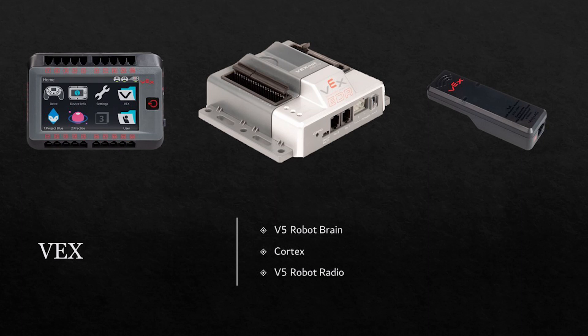The older VEX systems use the cortex, which is in the center, and shared similar functions, yet the connection for many of the components was not that secure. Finally, there is the robot radio that is specific to VEX, which is used for wireless communication during a match.